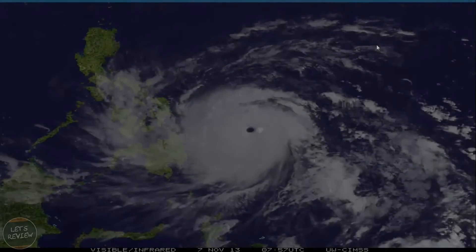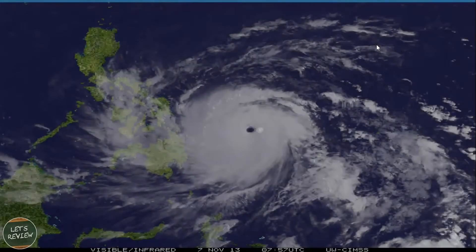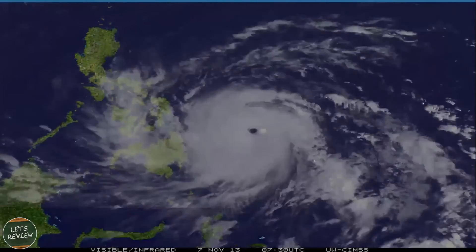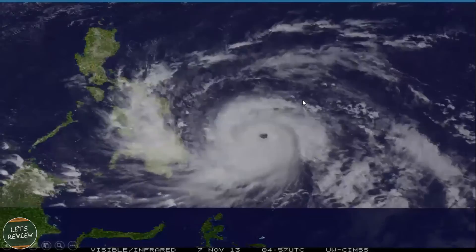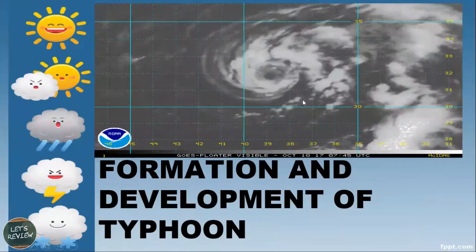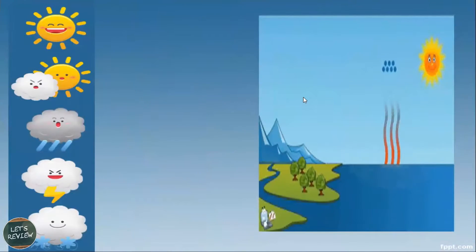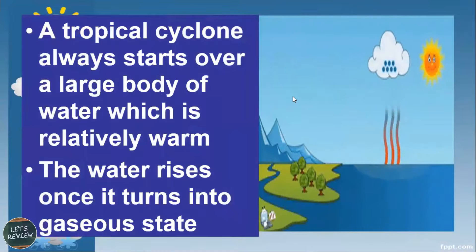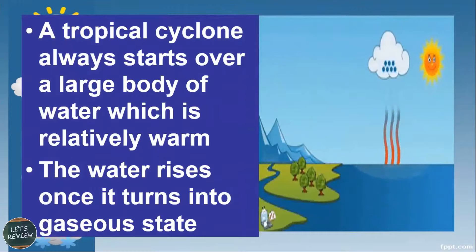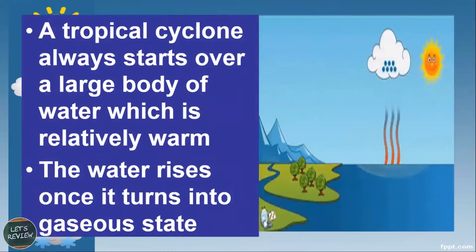Welcome to science class. Today we're going to talk about the formation of the typhoon. In the formation and development of a typhoon, it will always begin as a tropical cyclone and always starts over a large body of water which is relatively warm.